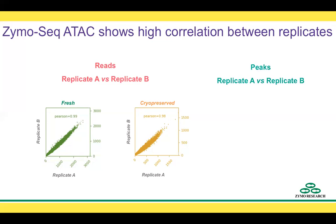A different way to determine correlation between replicates is to look at the peaks present in both replicates. Replicates that originated from the same cell suspension should have the same peaks — that is, the same areas of open chromatin. To perform this analysis, we took two lists of genomic coordinates for peaks called for each replicate and compared both lists. Using bedtools intersect, we counted over 92,000 peaks common between replicates.